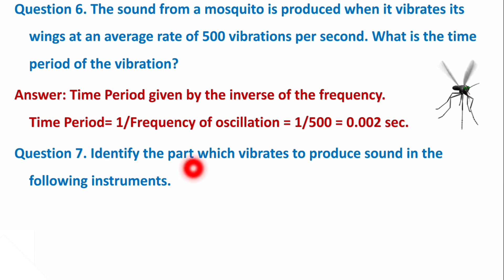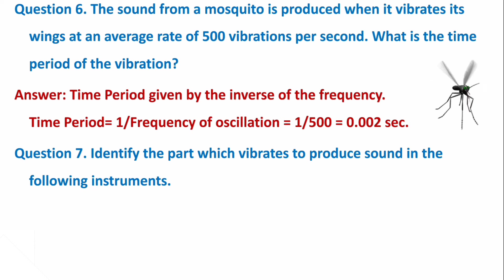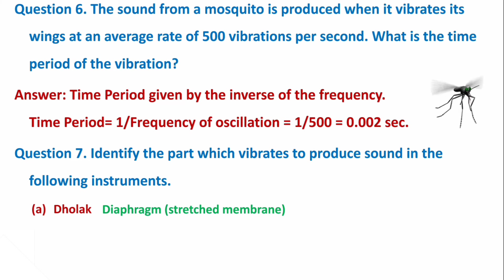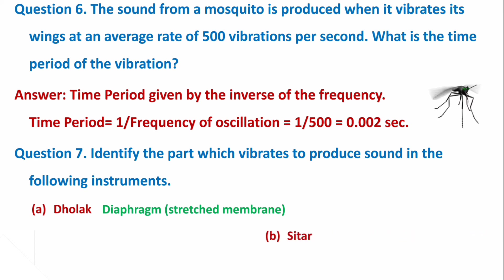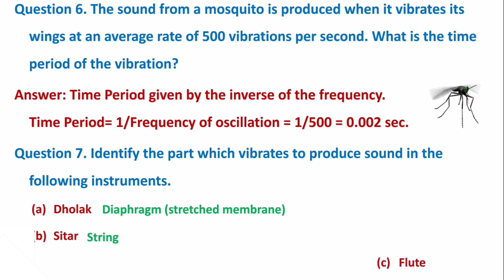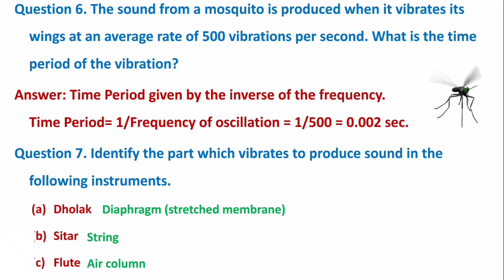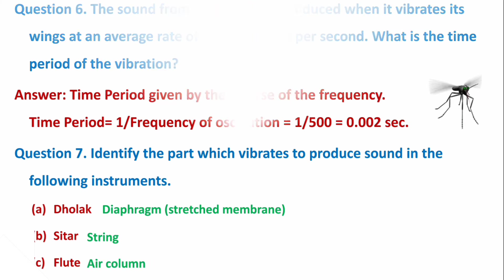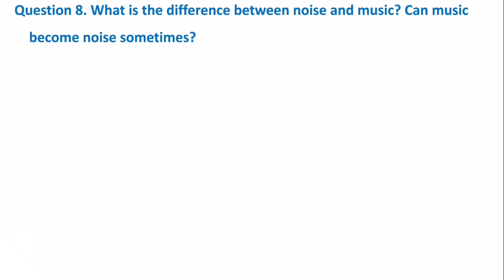Next question: Identify the part which vibrates to produce sound in the following instruments. Dholak — the stretched membrane (diaphragm) vibrates. Sitar — the strings vibrate. Flute — the air column inside vibrates.